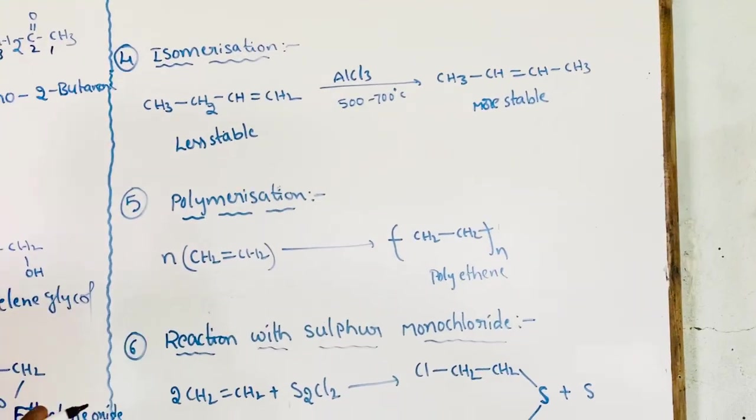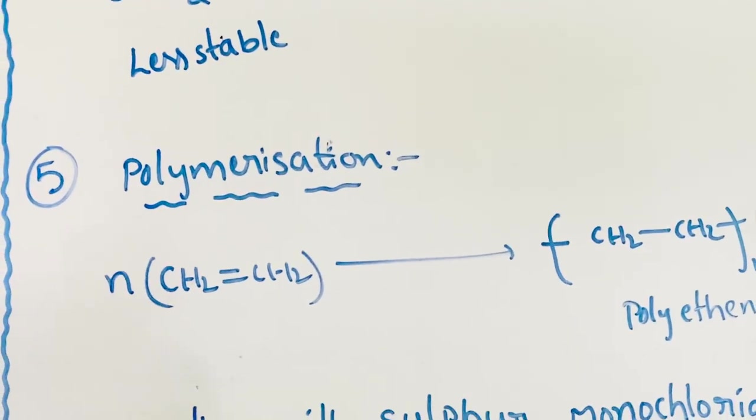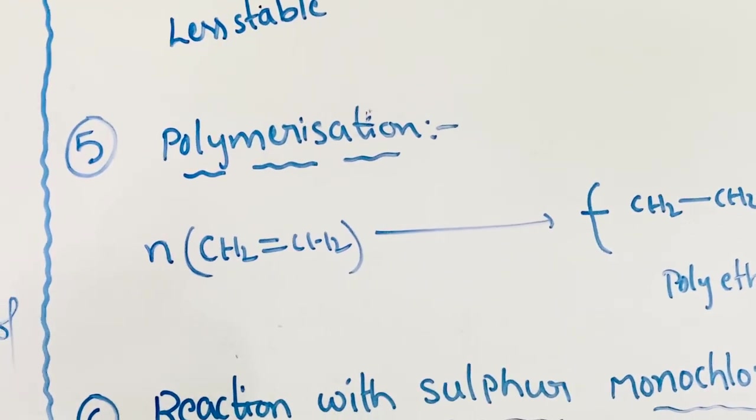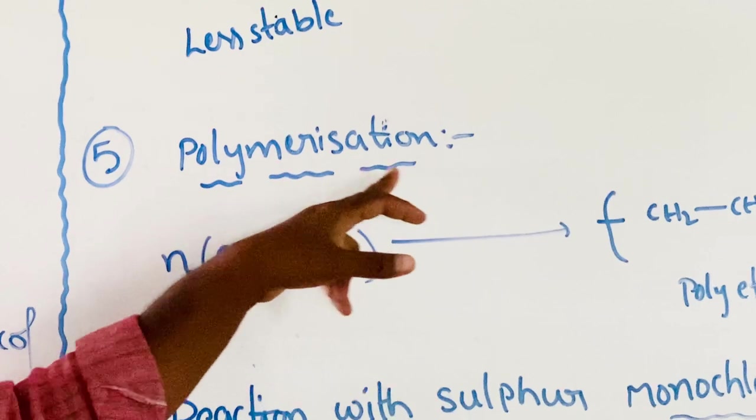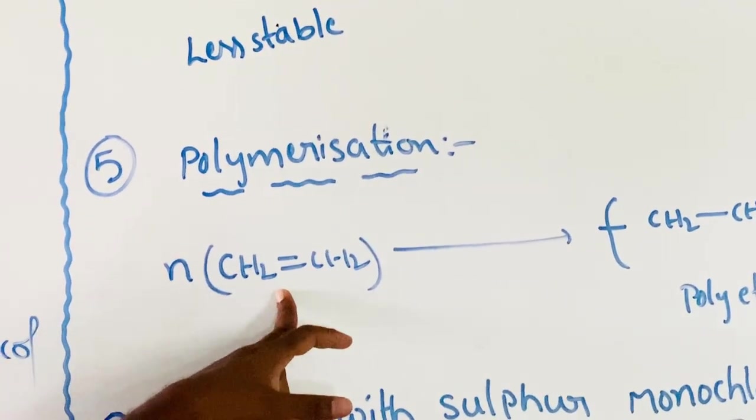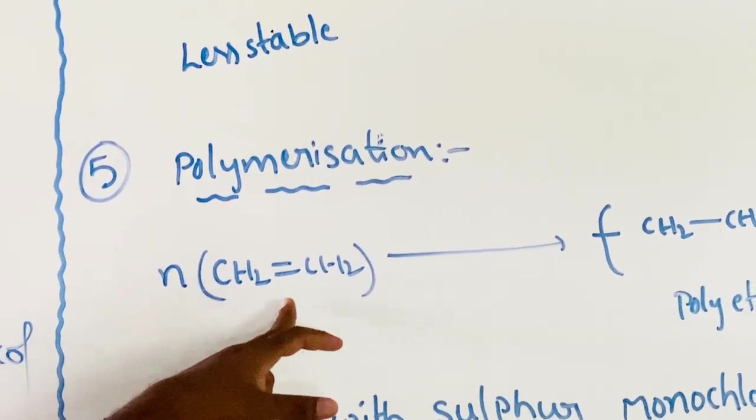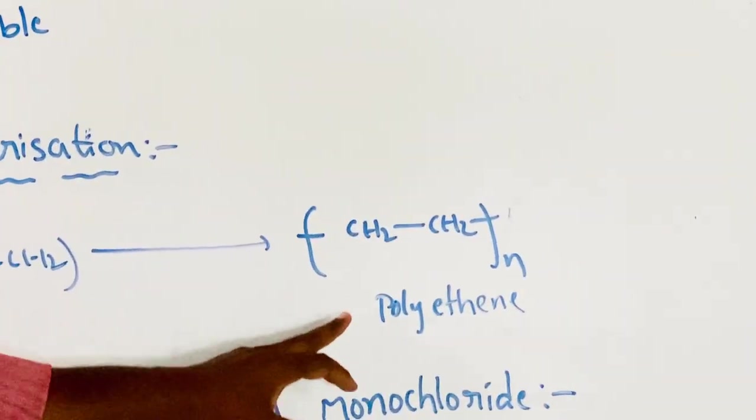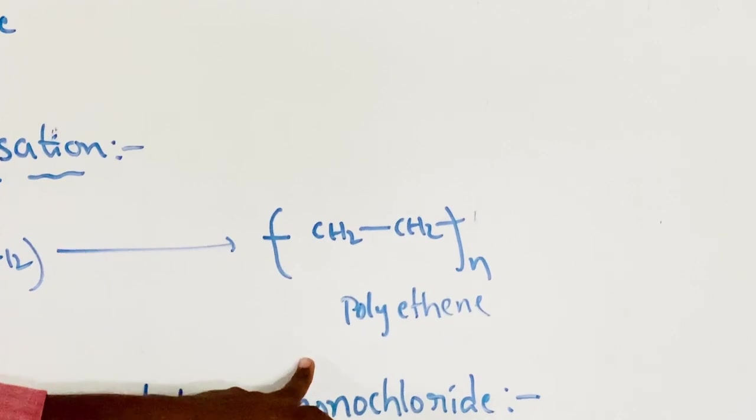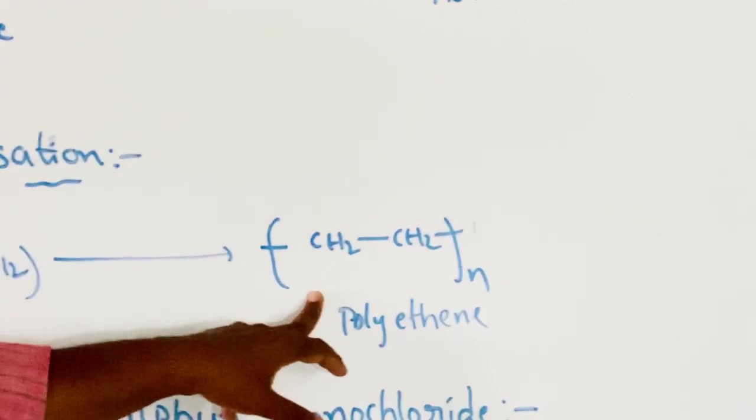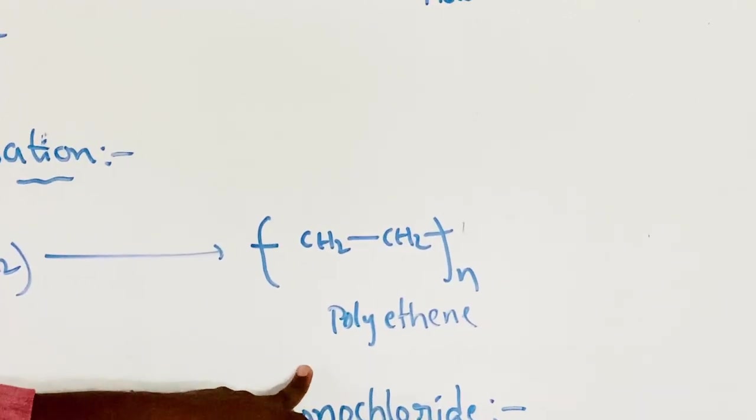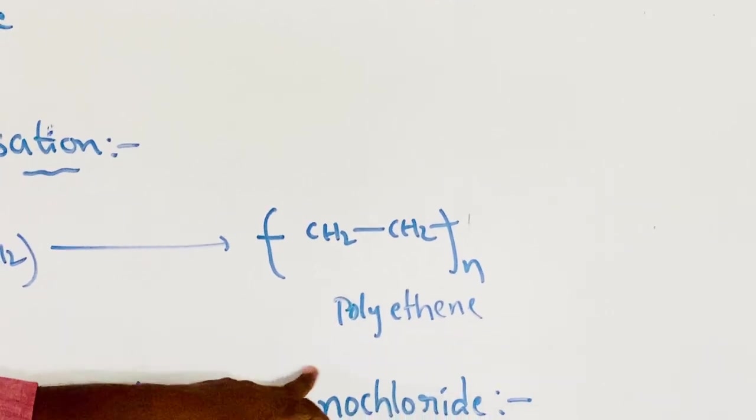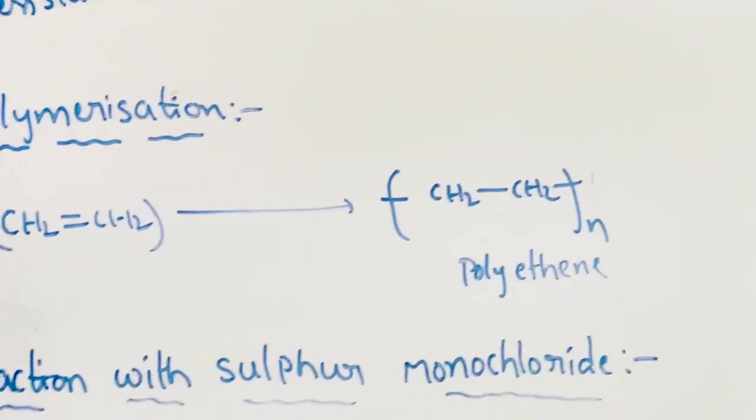Next, polymerization. Poly means number of. A number of monomer units join together to form a polymer. That is polymerization of alkenes. Ethene, a number of monomer units of ethene, undergo polymerization to give polyethene. Polyethene is used in agriculture irrigation. There are two types: low-density polyethene and high-density polyethene. Low-density polyethene is used in agriculture irrigation.